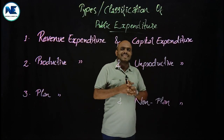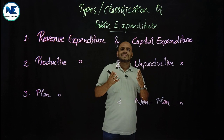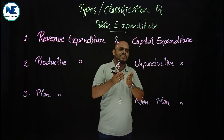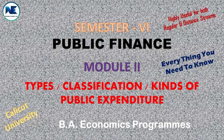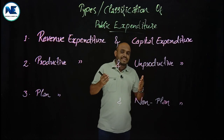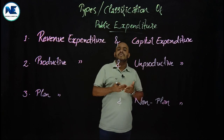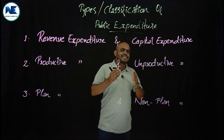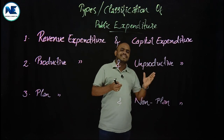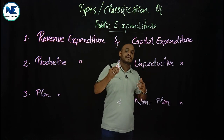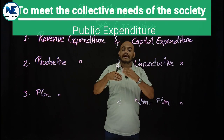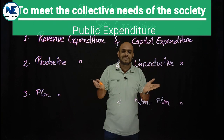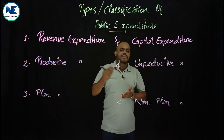Hello friends, good morning. Our topic today is the types or classification of public expenditure — a very simple and interesting topic. We have already discussed the meaning and definition of public expenditure: all expenses done by public authorities to satisfy the collective needs of the people or to meet the collective needs of society.